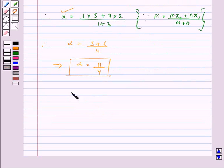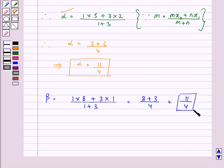Now similarly, we can find the value of beta that is equal to 1 into 8 plus 3 into 1 upon 1 plus 3. That is equal to 8 plus 3 upon 4, that is in turn equal to 11 by 4 itself.